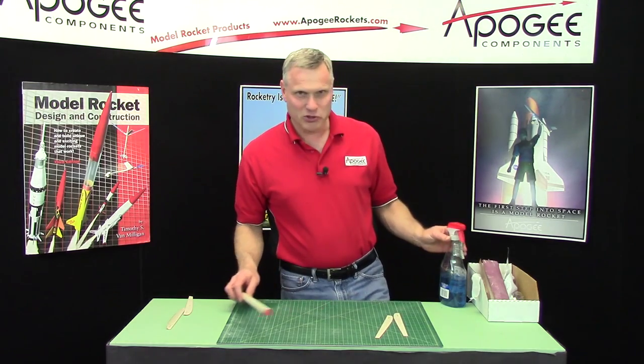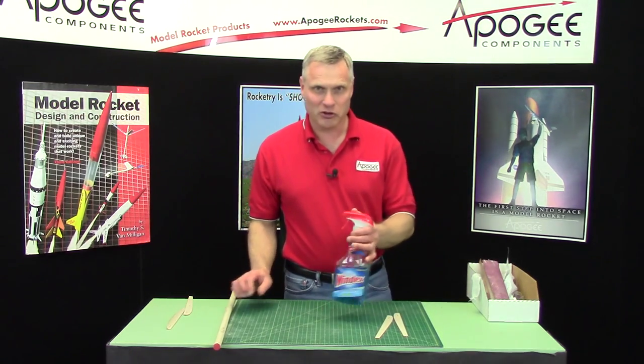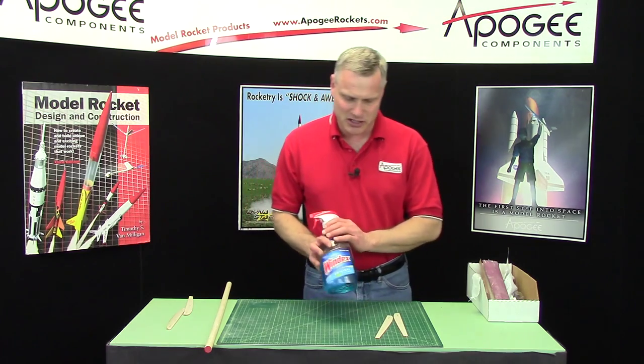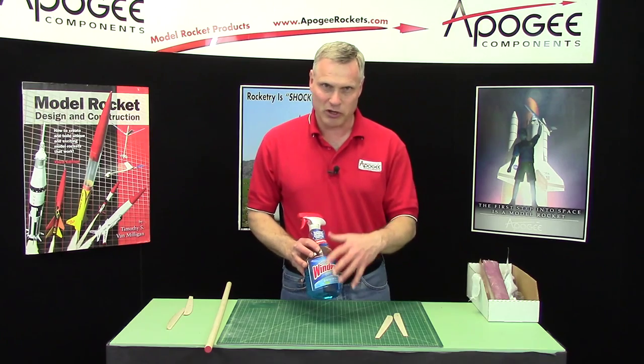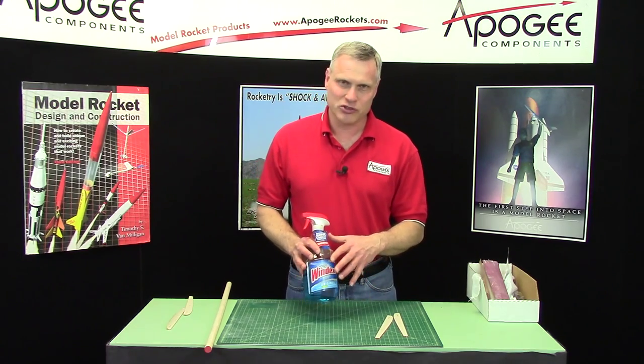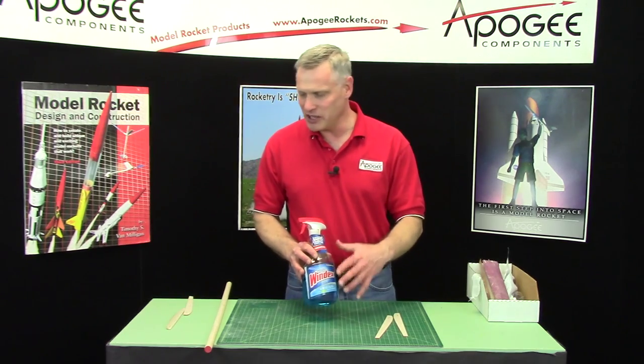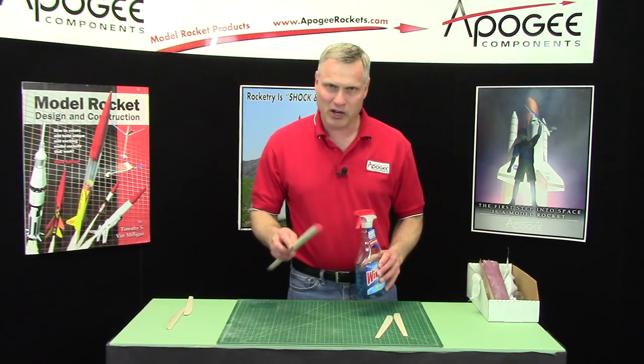For the ammonia solution I'm just going to use some Windex because it already has ammonia in it. The downside is it also has a little bit of soap in there and the soap makes it so that tape doesn't stick very well and we need to use some tape to wrap it around the wood dowel.